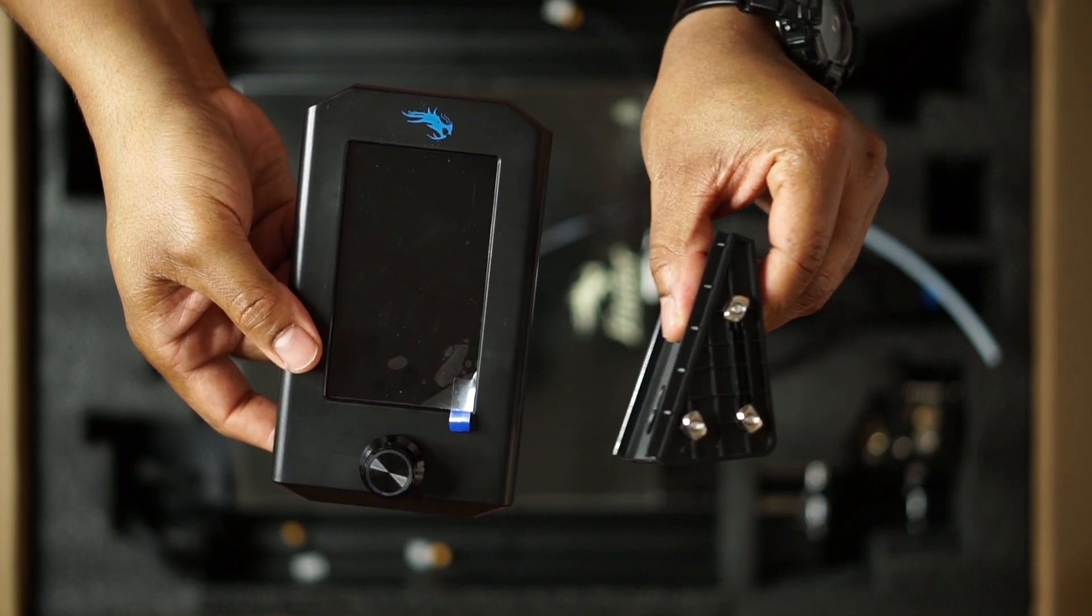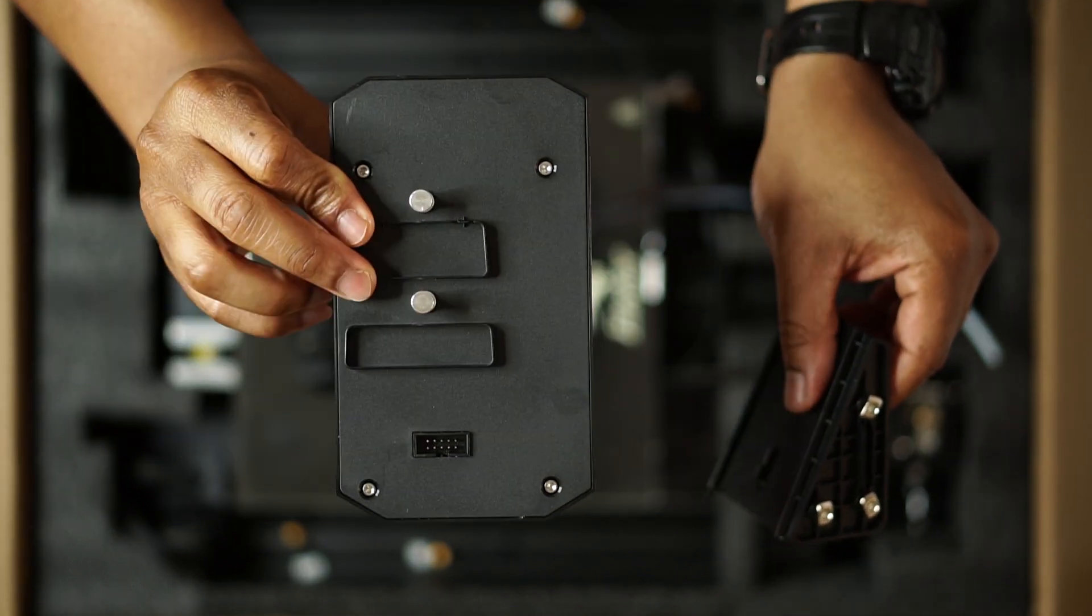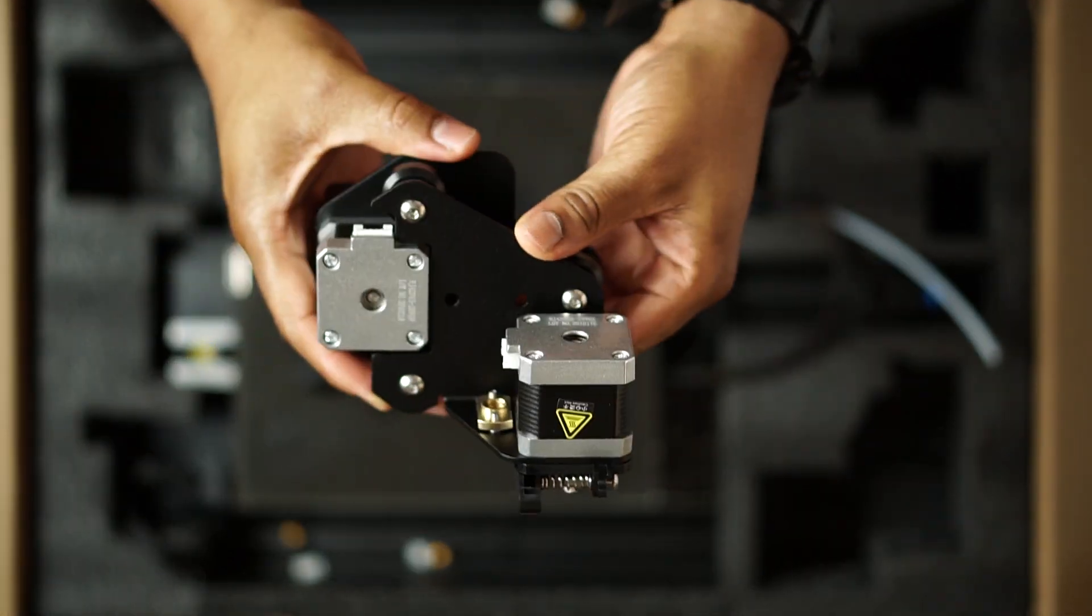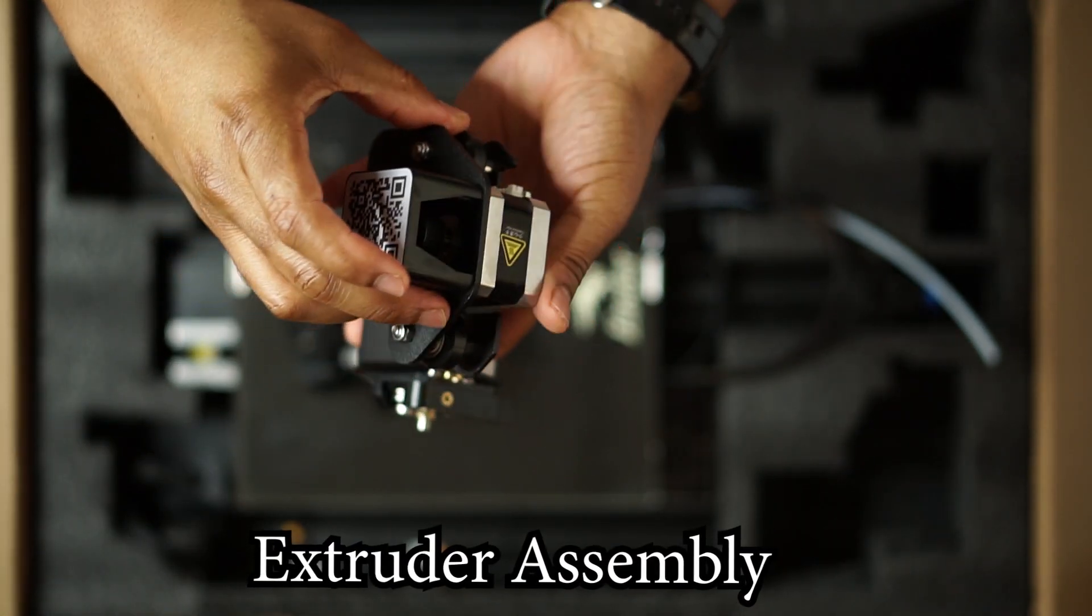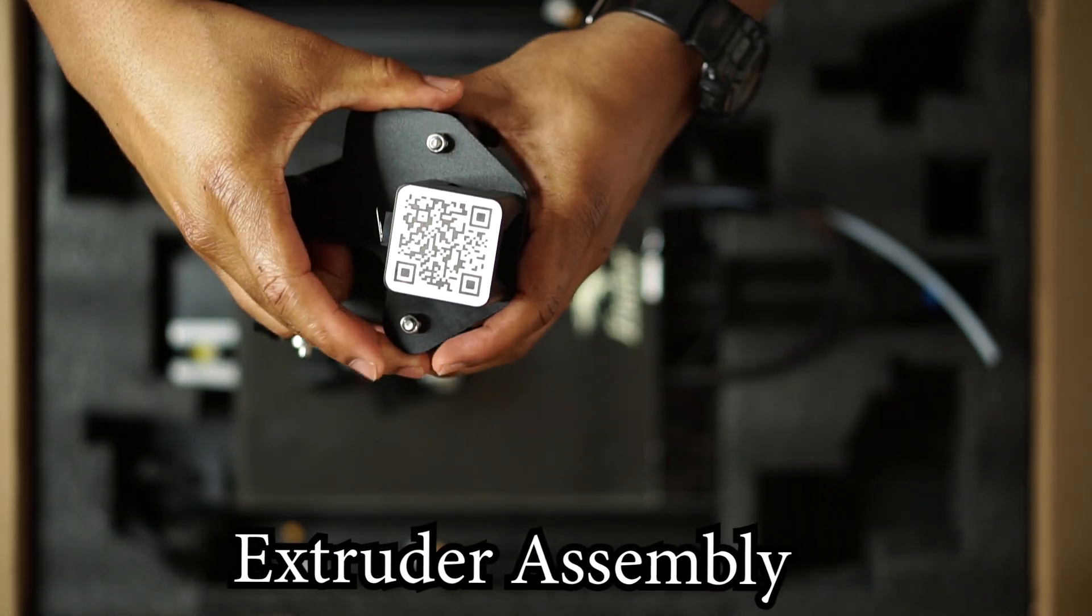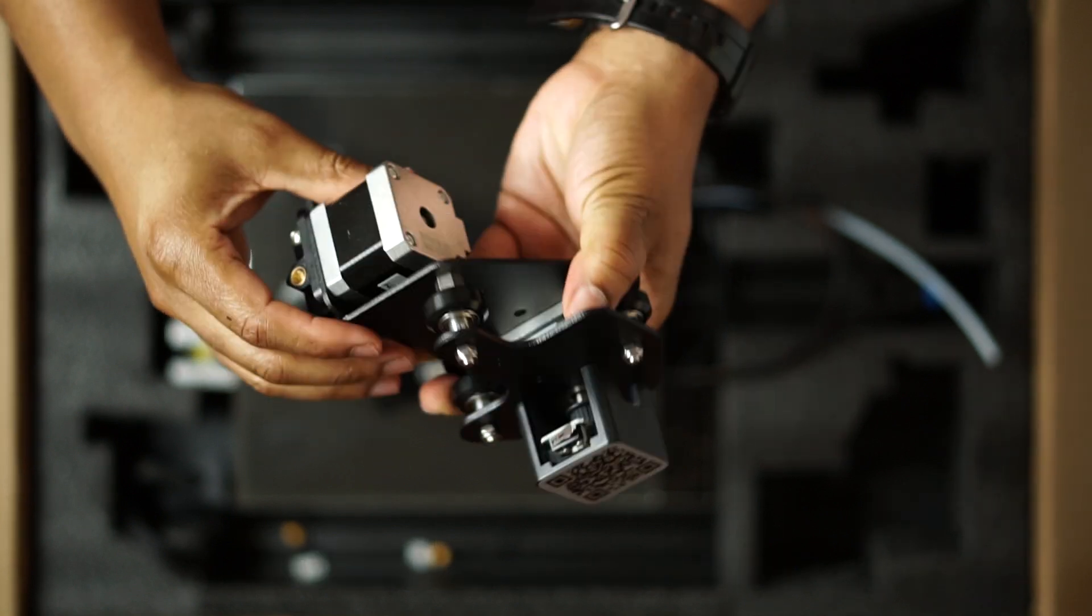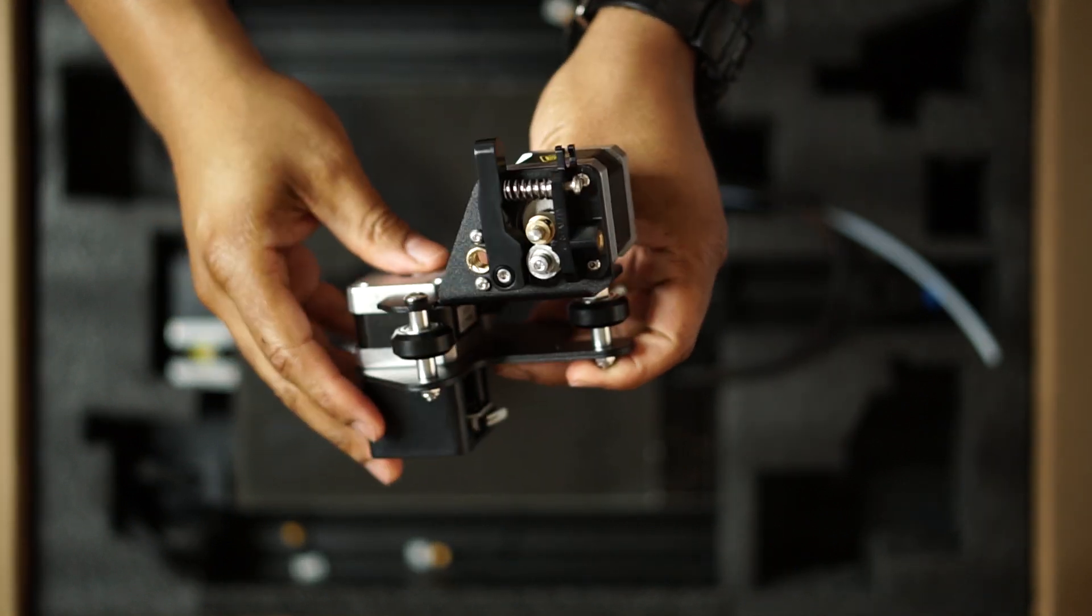Here you can see the screen bracket attaches to the base by three t-nuts. And here you have your extruder assembly, and this is the part of the printer that's going to actually feed your filament through to your nozzle for printing.